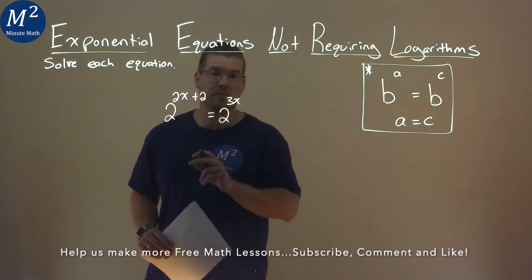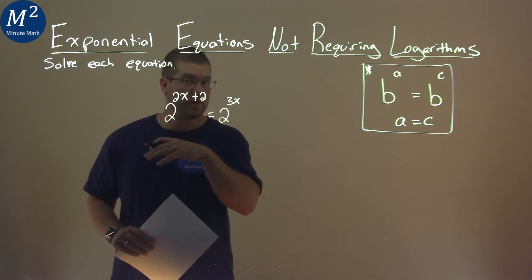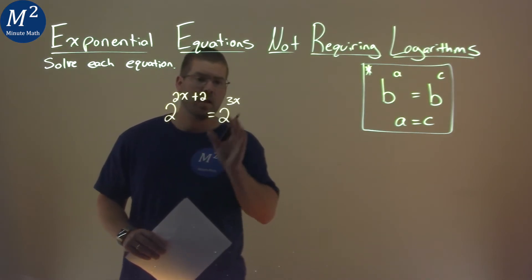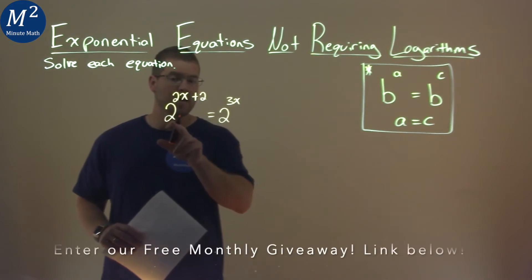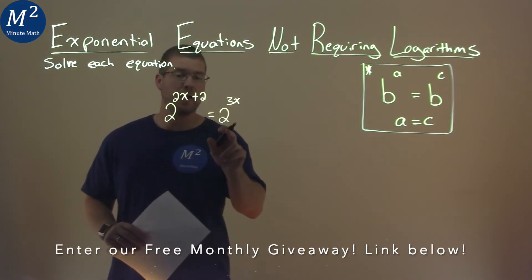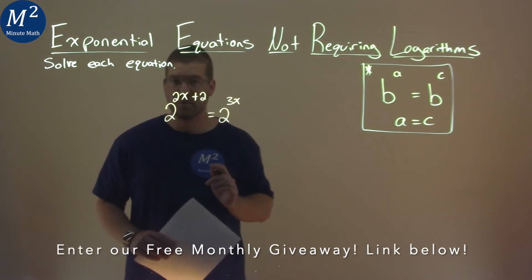We have the same base for each one here, each side of the equal sign, and that base is 2. And it's being raised to some exponent, but when that happens we can pretty much ignore the 2 now and just set the exponents equal to each other.